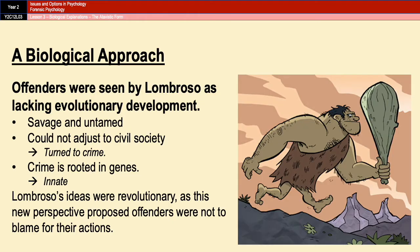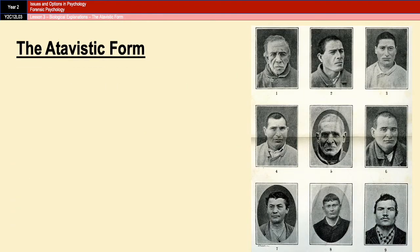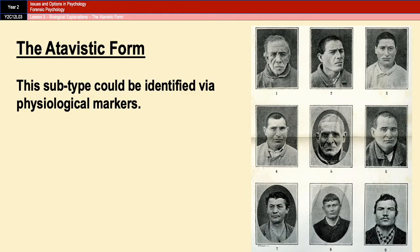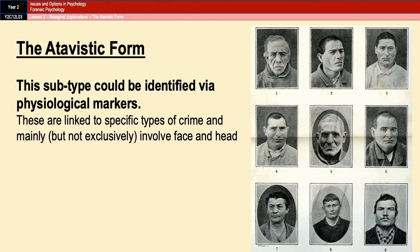This marked a very important turning point in how people saw and attempted to explain crime, and we'll have a closer look at that in one of our evaluation points. Lombroso argued that offenders could effectively be identified via particular physiological markers linked to particular types of offenses. These markers are biologically determined atavistic characteristics, which are mainly features of the face and head, but not exclusively, and it's these markers that make offenders physically different from the rest of us.